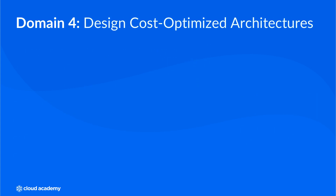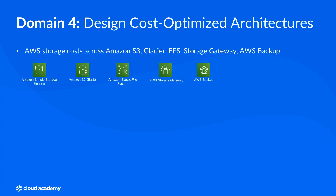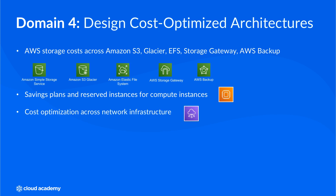The final domain of the certification looks at cost optimization across your architecture, so it's important to understand the different costing metrics to different services and how you can optimize their configurations. Here we spend time looking at the different costs associated with AWS Storage Services, such as service class or tiers, using specific management elements of a service — for example, provisioned throughput in EFS or S3 replication time control — using different types of requests, data retrieval and data transfer, replication and more. You will be introduced to compute savings plans and reserved instances and how these can be optimized to save you money across your EC2 fleets. And finally, a review of some of the cost optimization features and best practices when designing a cost-optimized network architecture.